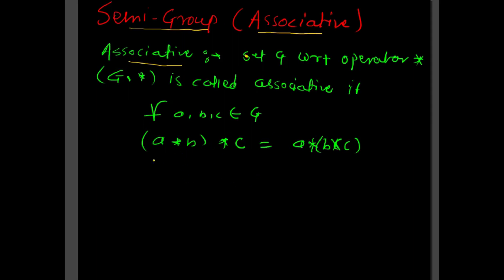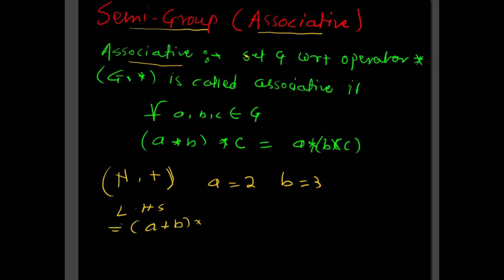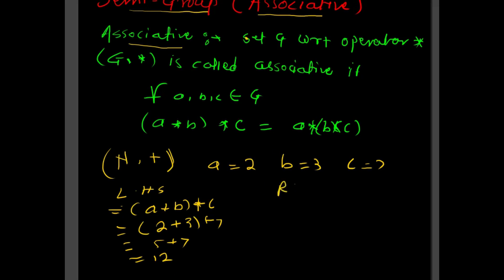Let us take an example with natural numbers and the addition operator. Select values: a = 2, b = 3, c = 7. For the left-hand side (LHS), compute (a + b) + c, which is (2 + 3) + 7 = 5 + 7 = 12.